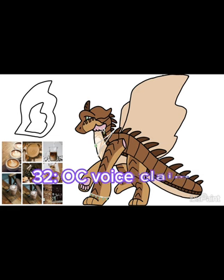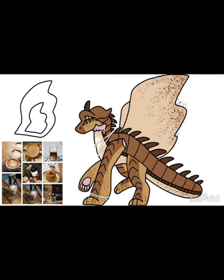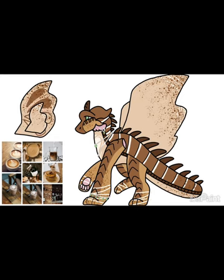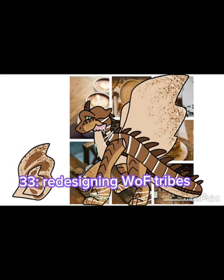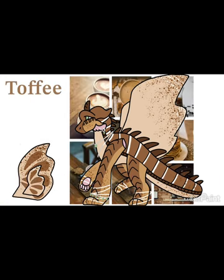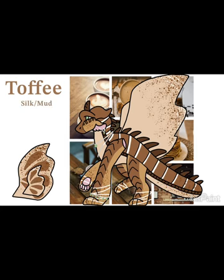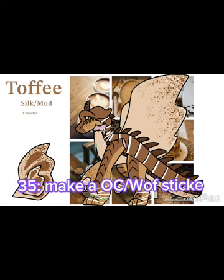Number thirty-three: redesigning with the Wings of Fire tribes — a fun way to show how you see the Wings of Fire world. Number thirty-four: make an OC based off of a song — use your favorite or random songs; it forces you to be creative. Number thirty-five: make your OC or a Wings of Fire character into a sticker — order some sticker paper online and have fun with it.